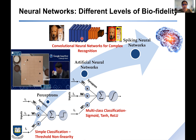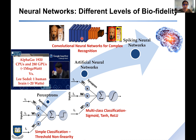Deep learning has broken all records recently. AlphaGo by Google DeepMind in 2014 defeated Go champion Lee Sedol four points to one — a tremendous feat for AI. More recently, DeepMind came up with AlphaFold, which allows very fast AI-based DNA genome sequencing. These are truly tremendous achievements on the part of AI.